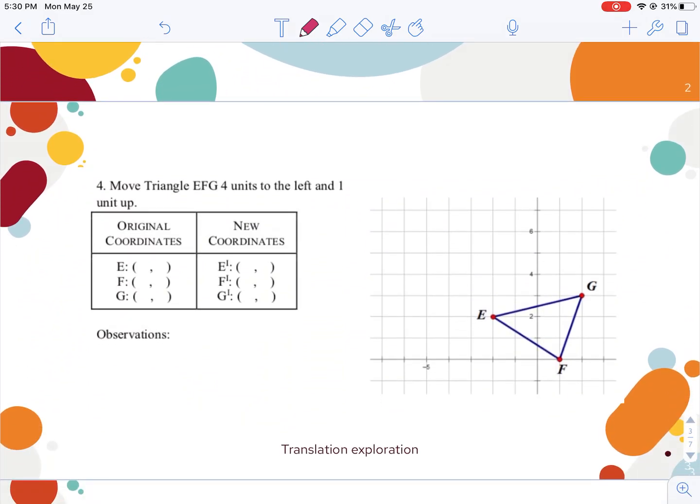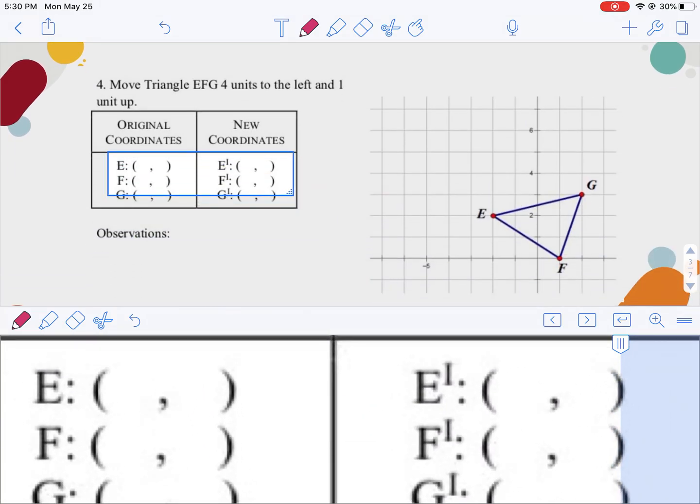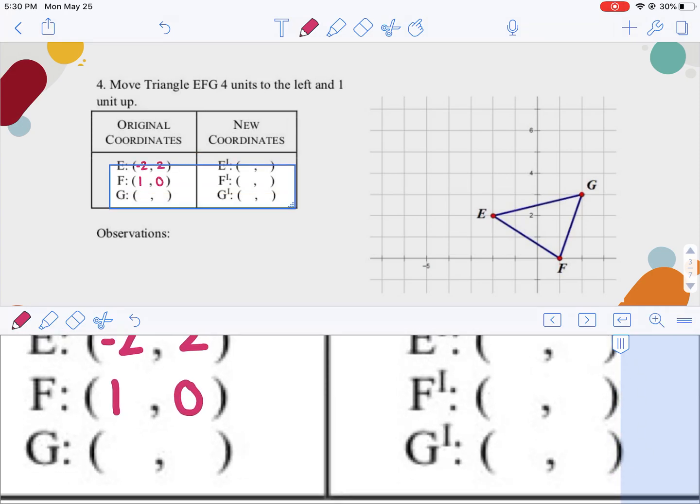We're asked to move triangle EFG four units to the left and one unit up. We're going to start by figuring out where is points E, F, and G. When I look at my graph, E is at negative 2, positive 2. F is at 1, 0. And G is at 2, 3.